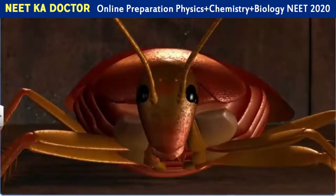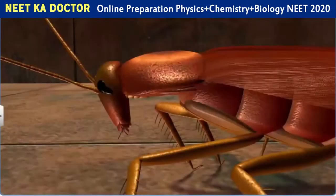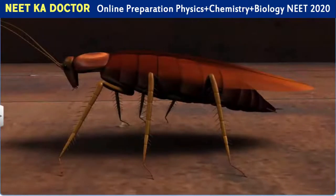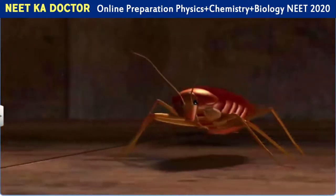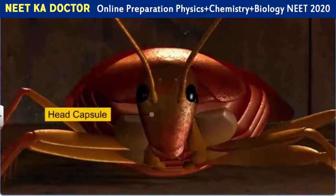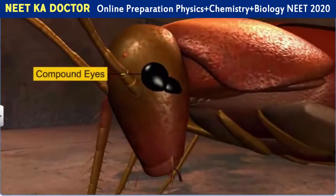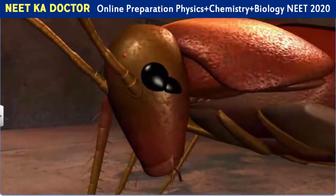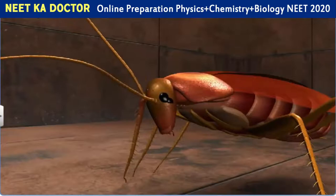The head of a cockroach is triangular and is attached to the thorax by a short, flexible neck. It is held at right angles to the long axis of the body. The head is formed by the fusion of six segments and is covered by a number of plates which constitute the head capsule. This capsule bears a pair of large compound eyes, and also a pair of long, slender antennae that arise from two membranous sockets. These antennae have sensory receptors which help monitor the surroundings.